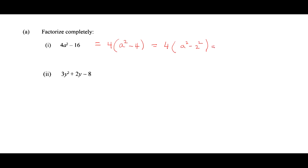And in the case of a difference of 2 squares, we can write this as 4 times a plus 2 times a minus 2. So this is how you factorize 4a squared minus 16. You'll need to recall that a squared minus b squared is a difference of 2 squares and this can be written as a plus b into a minus b. This is what I use here with a squared minus 2 squared.